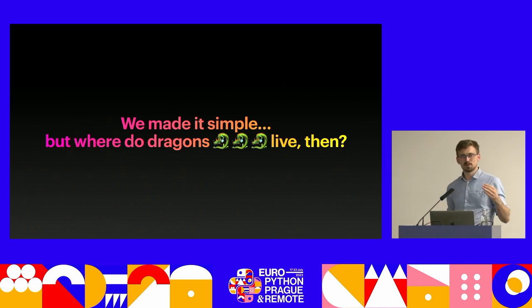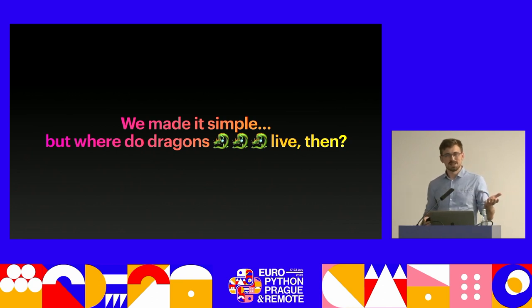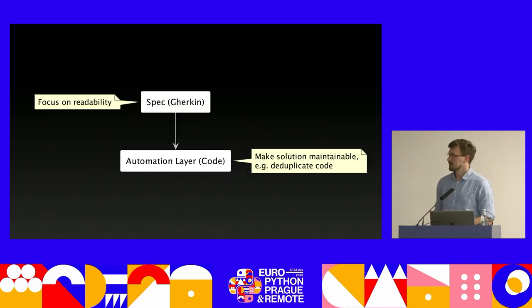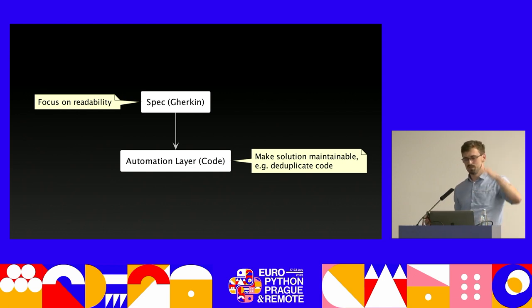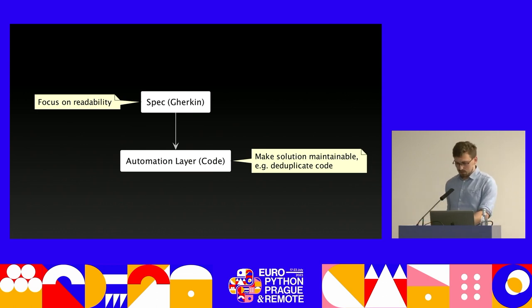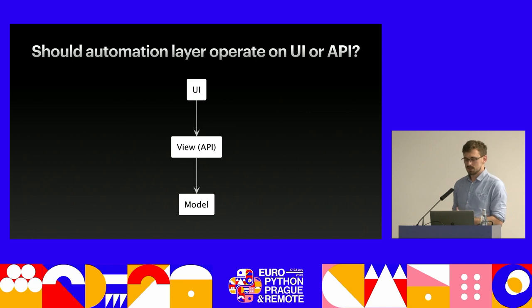This puts another point on our list: once we have the expected behavior captured in Gherkin using a collaborative process, keep specs short and simple. Think about architecture and boundaries so scenarios aren't too wide — not trying to test everything at once. That won't work long term: nobody will read them and they'll be hard to update. But if we make Gherkin simple while the underlying system is complex, we've just shifted the problem to the automation layer.